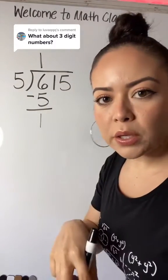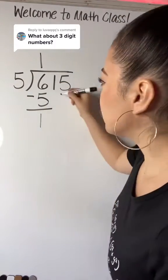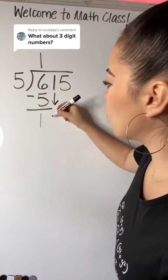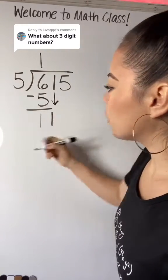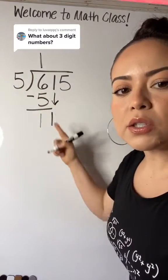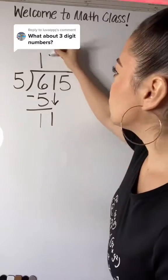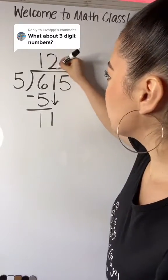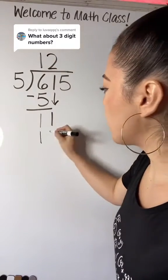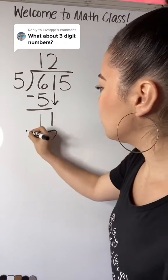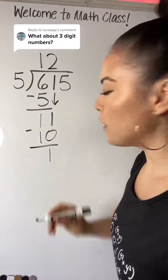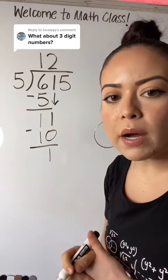And like I showed you in the previous video, you bring down the next digit, which is one, creating an 11. Five goes into 11 twice without going over — two times five is 10. We subtract and we have a leftover of one.